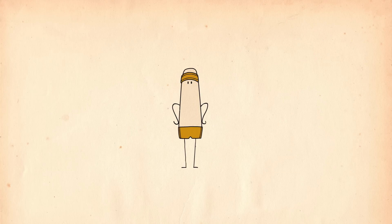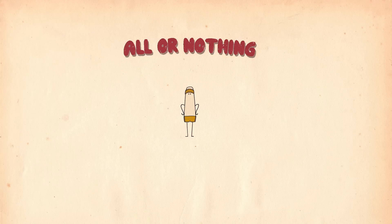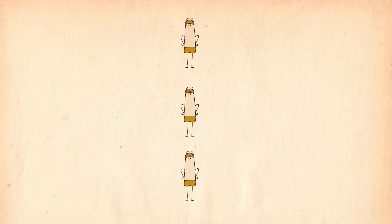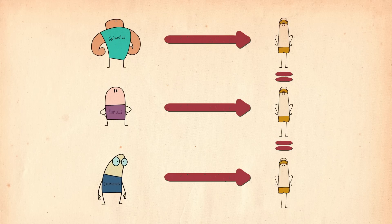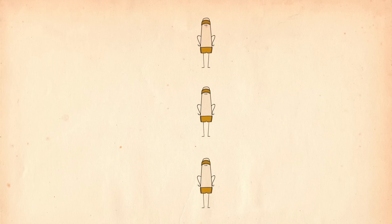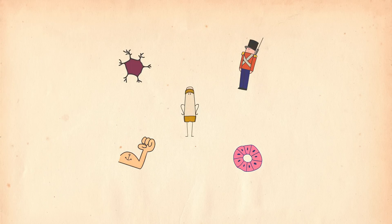The nerve impulse follows the law of all or nothing — that is, it is always the same, no matter how strong or weak the stimulus that triggers it. The transfer of nerve information from a neuron to another, or to an effector such as a gland or a muscle, occurs through the synapses.